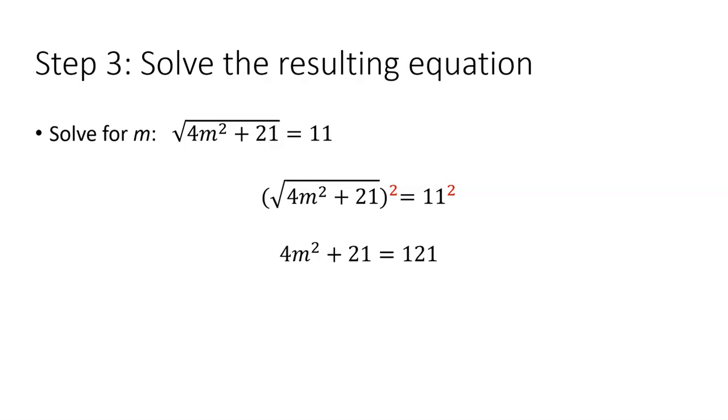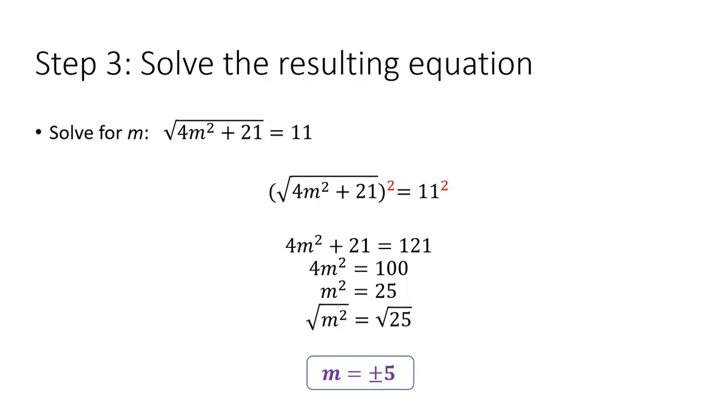And we will continue with our resulting equation, subtracting 21 from both sides, then dividing by 4, and now we'll take a square root, remembering that there's actually going to be two answers to this. Positive 5 and negative 5, each of those when you square them, does turn into 25. And that's why both positive and negative 5 work when you plug them back into the original equation.